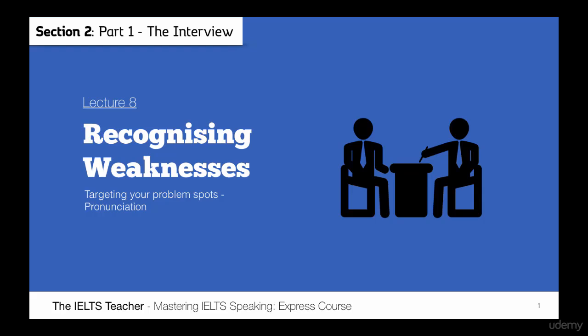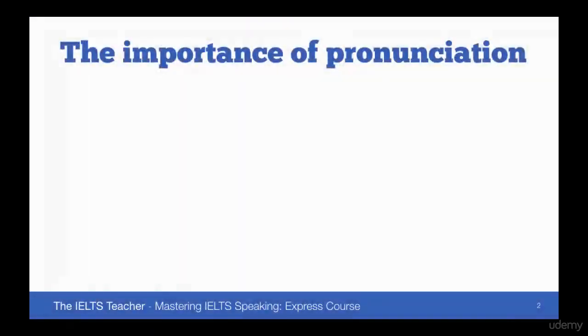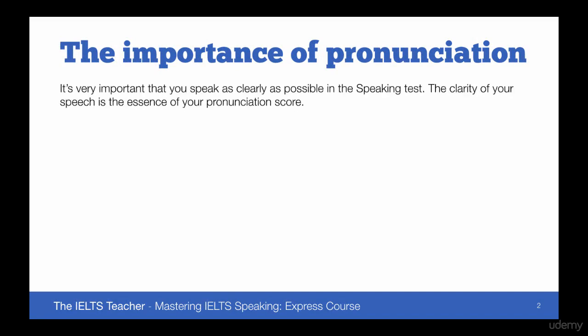The final lecture in this section is going to focus on pronunciation, which is also the final band descriptor category in the speaking band descriptors. In this lecture we're going to focus on recognizing weaknesses and targeting your problem spots so we can turn those weaknesses into strengths. It's very important that you speak as clearly as possible in the speaking test. The clarity of your speech is basically what gives you your pronunciation score.